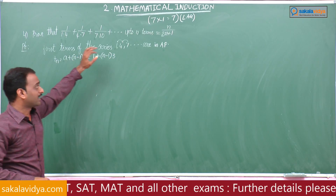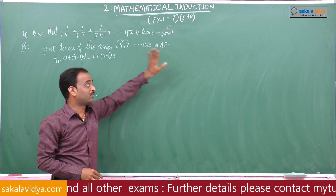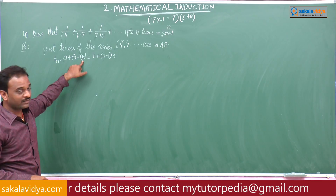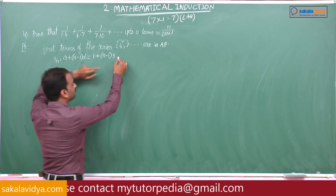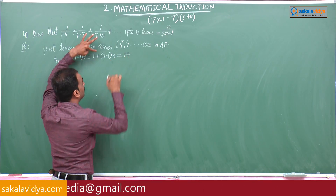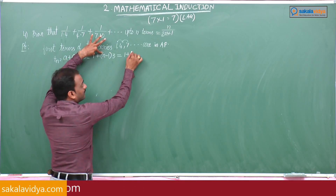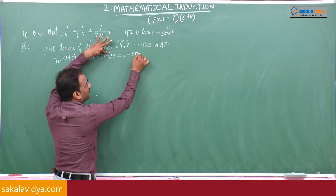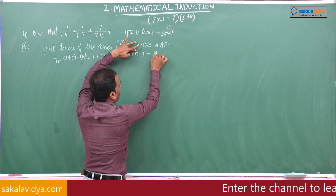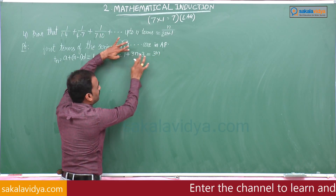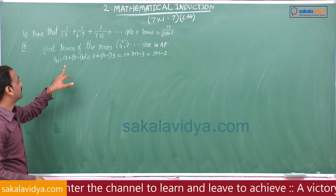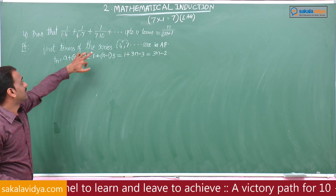So d = 3. The nth term = 1 + (n-1)×3 = 1 + 3n - 3 = 3n - 2. Therefore, 3n - 2 is the nth term of the first terms series.